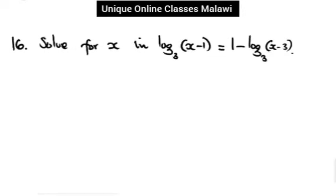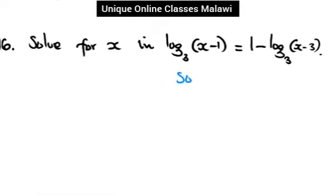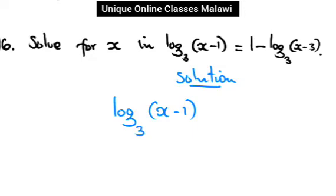Solution: on the left-hand side we have log(x minus 1) base 3. When you have a log of a number whose base equals that number, it equals 1. So the 1 on the right-hand side becomes log 3 base 3, since log 3 base 3 equals 1.